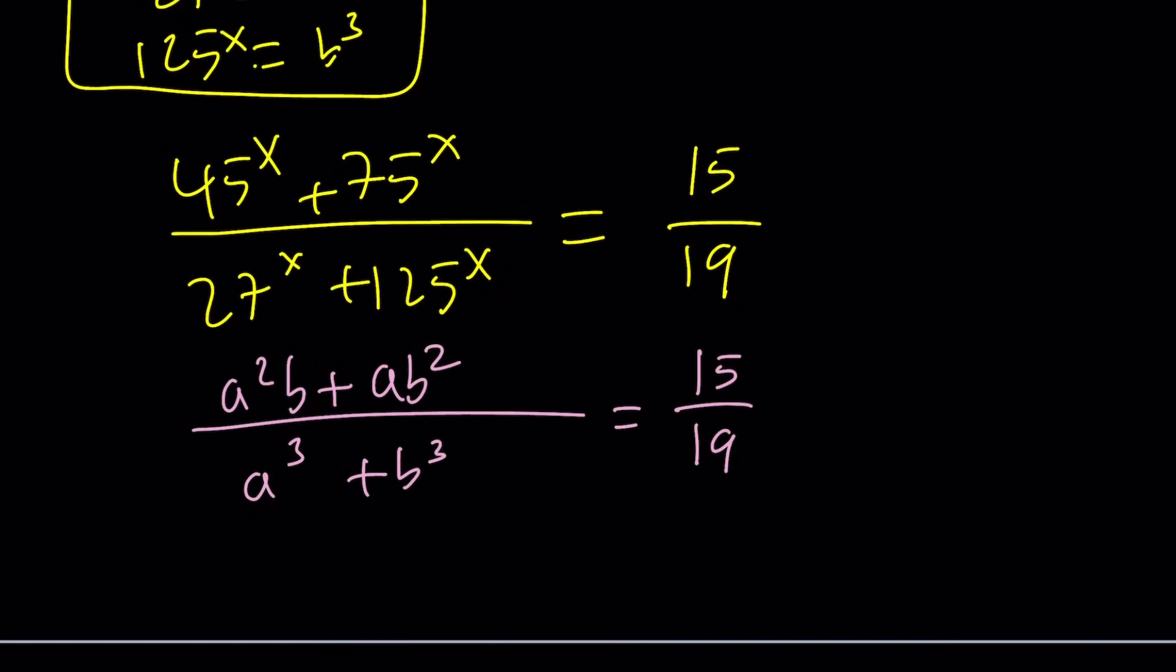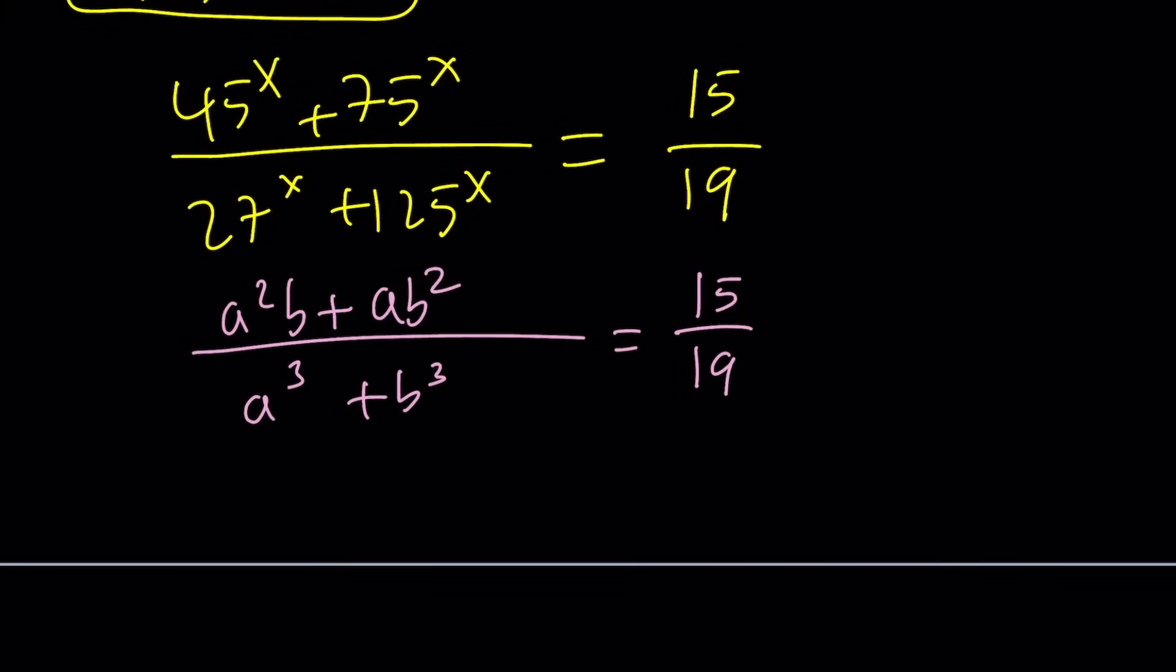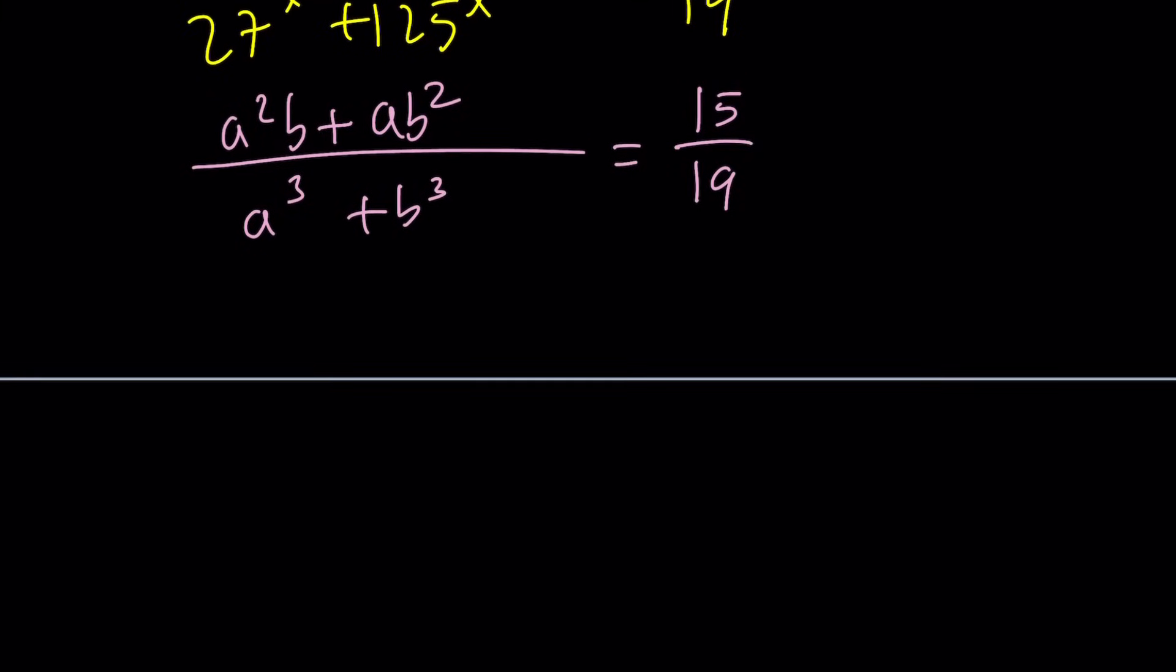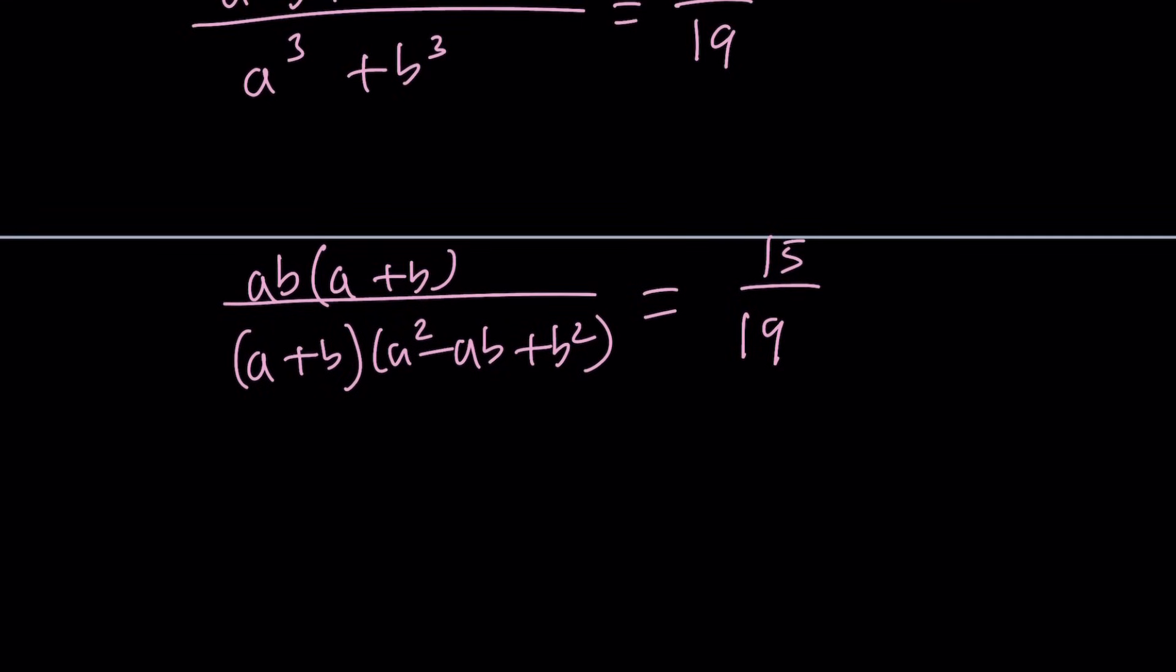One of the things we need to think about is can we simplify this? And what happens if we do? Are we losing any roots? Because any time you have an equation and you cancel out some factors, you have to be careful because you could be losing some solutions. We can factor out an ab, a plus b, and then at the bottom, sum of two cubes gives us the following, and this is equal to 15 over 19. a plus b is a common factor, so I'm going to assume that a plus b does not equal 0 and simplify this. Then I'm going to consider the case where a plus b is 0. Let's cancel these out.